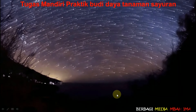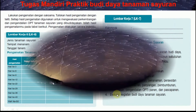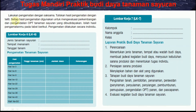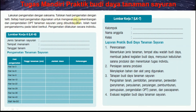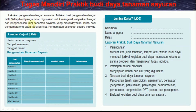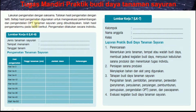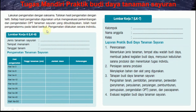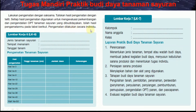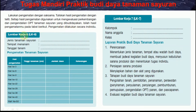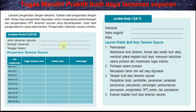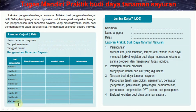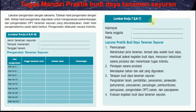Selanjutnya, lakukan pengamatan dengan seksama dan tulislah hasil pengamatan dengan teliti. Setiap hasil pengamatan digunakan untuk mengevaluasi perkembangan dan pengendalian organisme pengganggu tanaman (OPT) pada tanaman sayuran yang dibudidayakan. Isilah hasil pengamatanmu pada tabel berikut. Pengamatan dilakukan secara mandiri—lembar kerja LK6: jenis tanaman, tempat menanam, tanggal tanam, mulai hari ke-3 sampai hari ke-50.